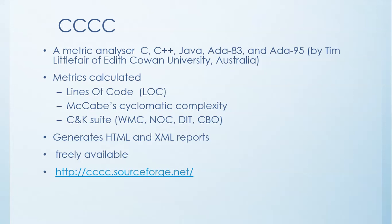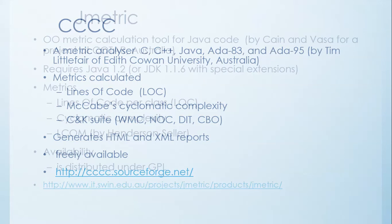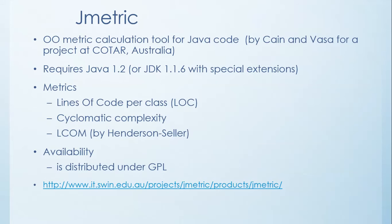You can actually run your source code through it and get some complexity measures out of it. JMetrics is another popular program you can use. It usually does object-oriented metric calculations for Java. It requires at least Java 1.2 or above. It gives you things such as the LOC per class, the Cyclomatic Complexity, and LCOM.